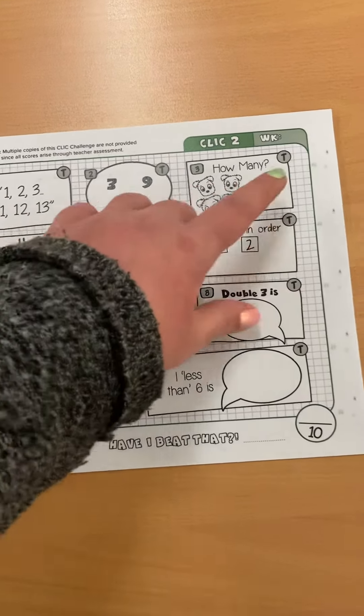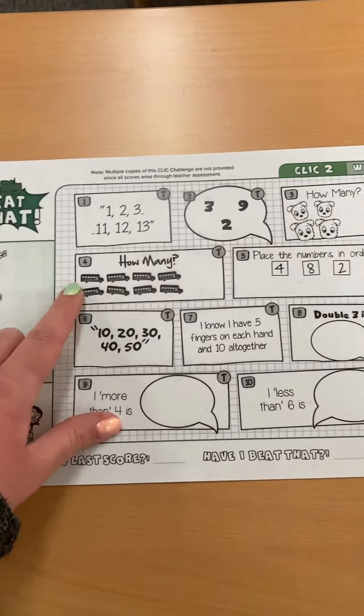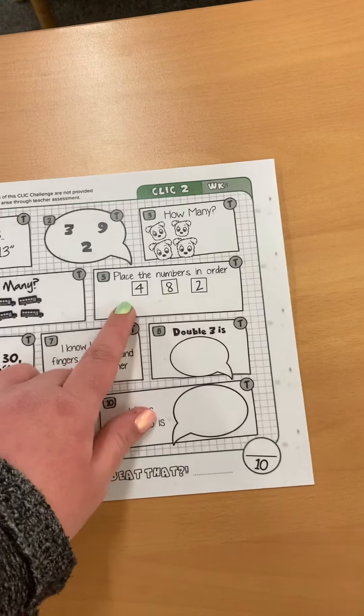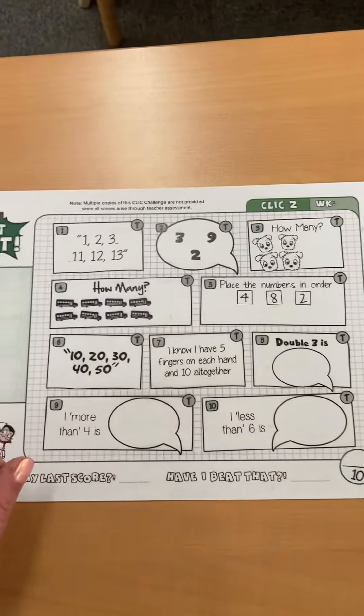Count how many dogs there are and write the answer in here. How many buses? Write the answer in here. Can you put these in order? So which is the biggest and the smallest? Put them in the correct order.